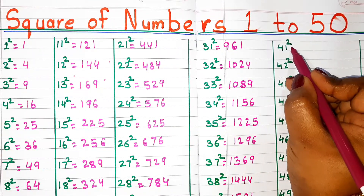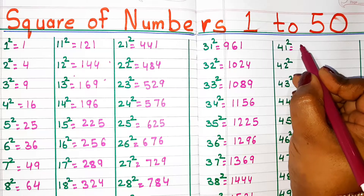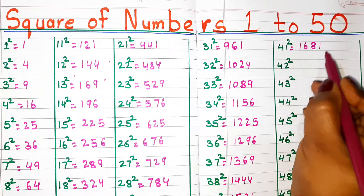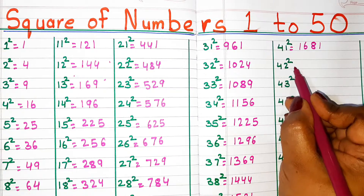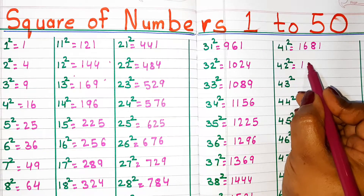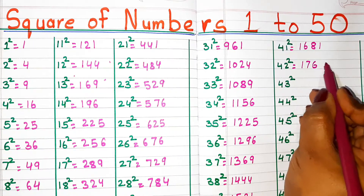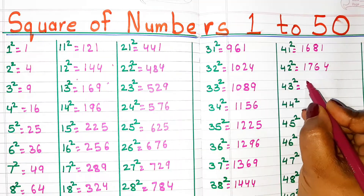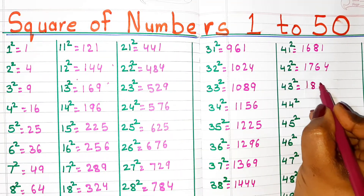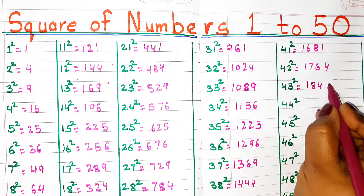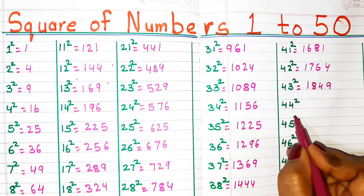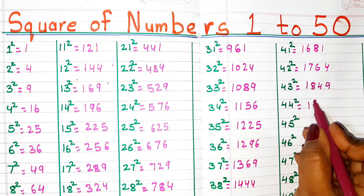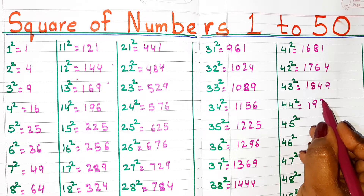Square of 41, 1681. Square of 42, 1764. Square of 43, 1849. Square of 44, 1936.